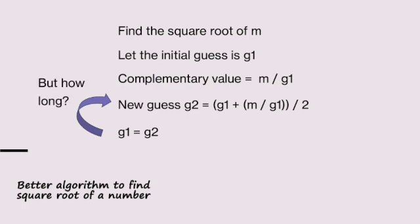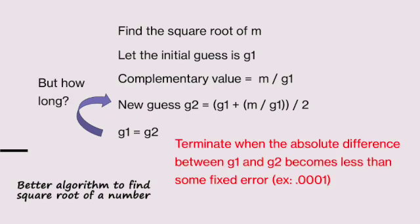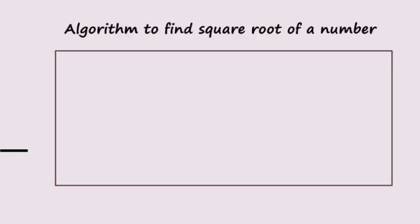But how long are we going to do it? We have to terminate when the absolute difference between g1 and g2 becomes less than some fixed error. If the difference is less than 0.0001, we can stop. Floating values are stored in computer as 6.00001, for example. That's why the difference must be less than this fixed error.